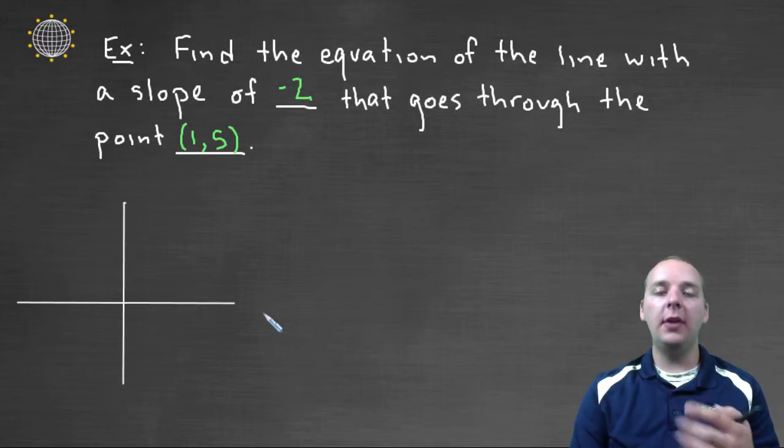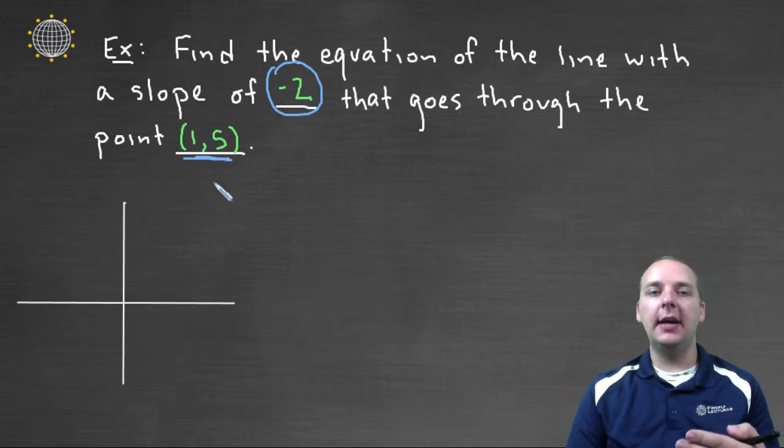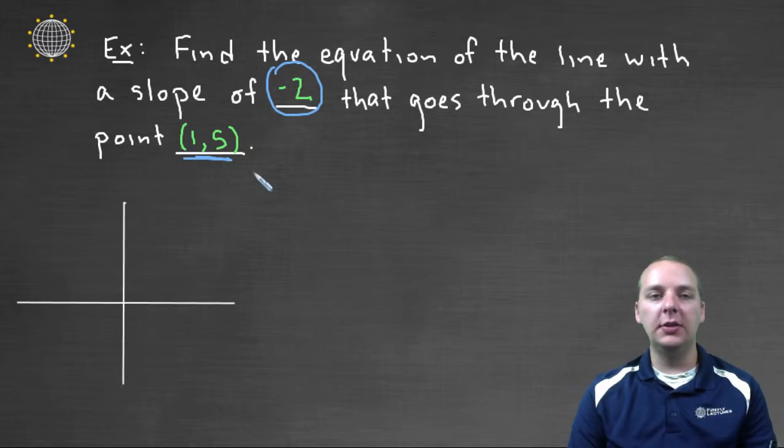But what will often happen is they might give you the slope of the line, but the point that it goes through won't be on the y-axis, but will still be asked to provide the slope-intercept form for the equation of the line. So let's see how we do that.